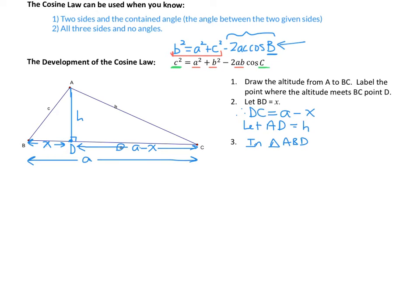Using the Pythagorean theorem in triangle ABD: C squared equals X squared plus H squared.